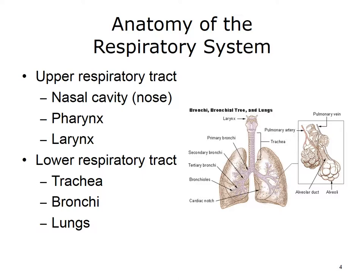The pharynx is a muscular tube approximately 5 inches long that extends from the base of the skull to the esophagus. It is divided into three main sections, and it is the passageway for both food and air. The epiglottis prevents food from entering the respiratory tract while swallowing.